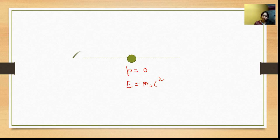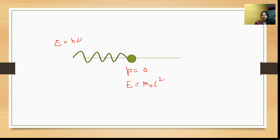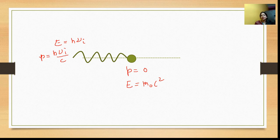Now radiation is incident on the electron. When radiation is incident, its energy is E equal to h-nu. To differentiate before and after scattering, we use the suffix 'i' for incident. The momentum of the incident radiation is p equal to h-nu-i upon c. So before scattering, this is the energy and momentum of the radiation.